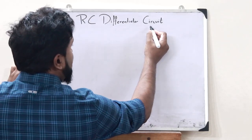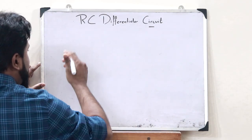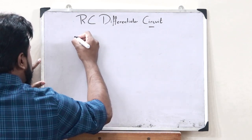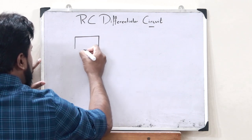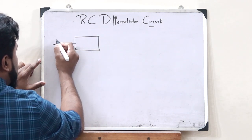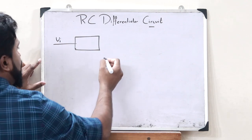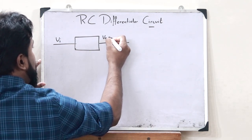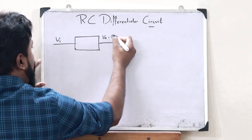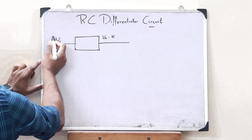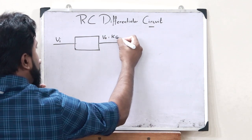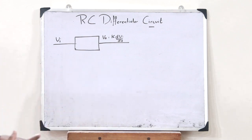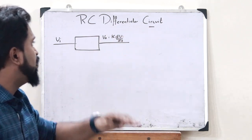This is basically an electronic circuit that can differentiate a particular voltage. It is essentially a circuit in which whatever voltage we give as input Vi, the output obtained is always equal to a particular constant into the differentiation of this particular input voltage. Such a circuit is what we refer to as a differentiator circuit.